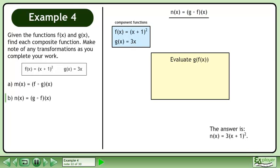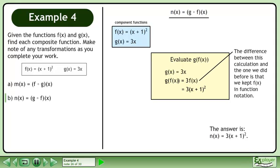Evaluate g at f. We know that g(x) = 3x. So g(f) = 3 times f. This gives us 3(x + 1)², the same result we obtained earlier. The difference between this calculation and the one we did before is that we kept f in function notation.